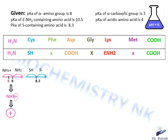For cysteine, we have the thiol ionizable group with a pKa of 8.3. We put it in the middle of the axis. If the pH is lower than 8.3, the protonated form SH predominates; if it's higher, the deprotonated form S− predominates. At pH 6, which is lower than 8.3, the SH form predominates. As you can see, there is no charge sign here, so the charge is zero. Phenylalanine has no ionizable group.